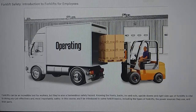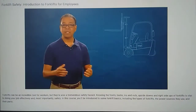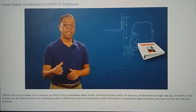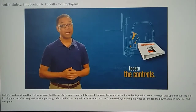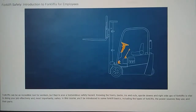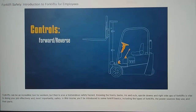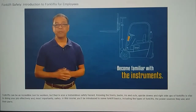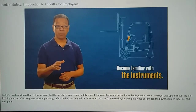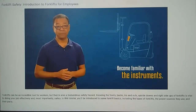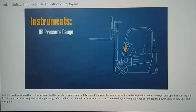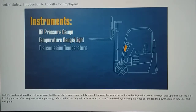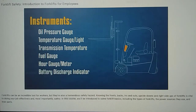Of course, to operate a forklift, you'll need to understand the controls. Study the operator's manual for your specific forklift, then locate the controls and learn how to use them. The main four are forward and reverse directional controls, hydraulic lift controls, pedals for accelerating and braking, and the parking brake. Along with the controls, you'll want to become familiar with your forklift's instruments, located on the dashboard, which most likely include the instrument panel, oil pressure gauge, temperature gauge or light, transmission temperature, fuel gauge, hour gauge, hour meter, and battery discharge indicator.